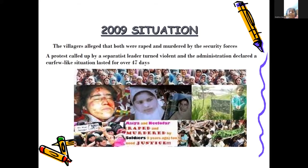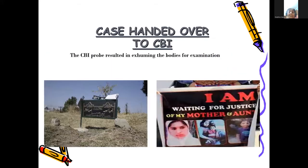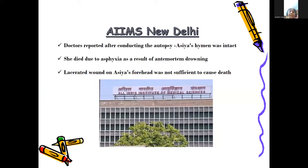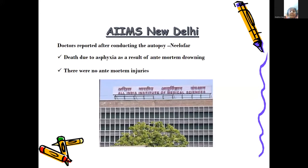Because of this, there was allegation that both were raped and murdered by the security forces. There was a protest for 47 days, and an SIT was made; after that, the case was transferred to CBI. CBI re-examined the bodies and invited AIIMS doctors from forensic medicine from New Delhi. Dr. Dogra and his team visited the crime scene and after conducting the autopsy reported that Aisha Jain was intact — meaning no sexual assault — and she died due to asphyxia as a result of antemortem drowning. For Niloufar Jain also, there was no sexual assault and it was a simple drowning.